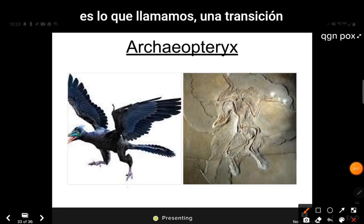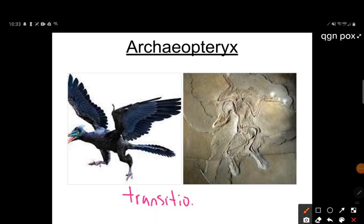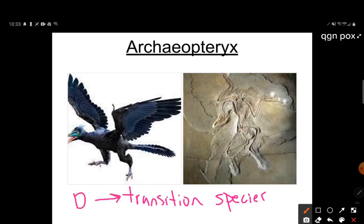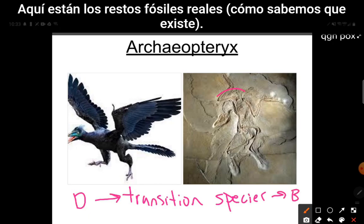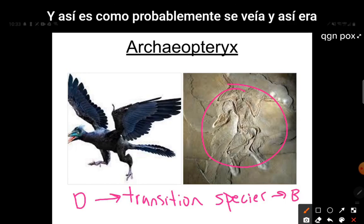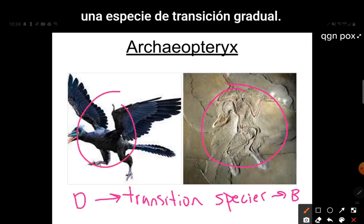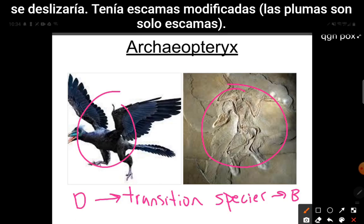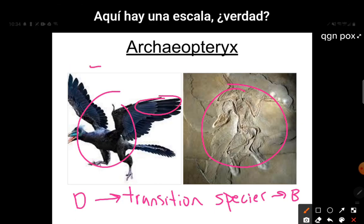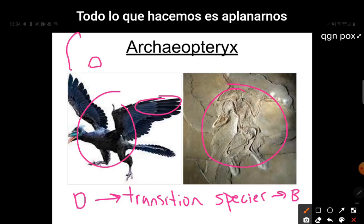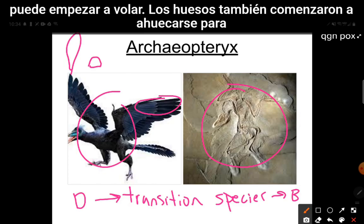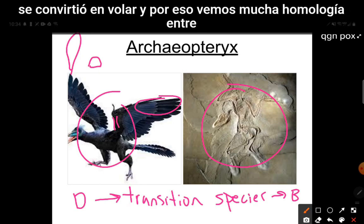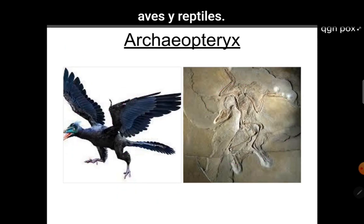Archaeopteryx is what we call a transition species, because it was a dinosaur that became a bird. Here are the actual fossil remains and what it probably looked like. There was some sort of predatory dinosaur that, to help catch prey, would glide — it had modified scales. Feathers are just scales: you flatten out a scale and now it can be used for wind resistance and you can start flying. The bones also started to hollow out to make it more capable of gliding, and that gliding eventually turned into flying. We see a lot of homology between birds and reptiles.